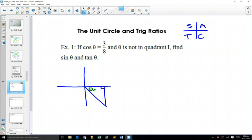Now if cos of theta is three-eighths, well that's adjacent over hypotenuse, we can label this side as three and this side as eight. Test your a-squared plus b-squared equals c-squared skills. This side is going to be square root of sixty-four minus nine, fifty-five.